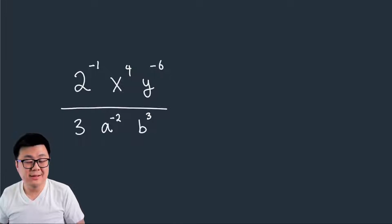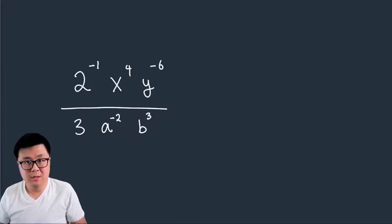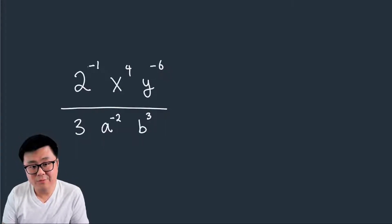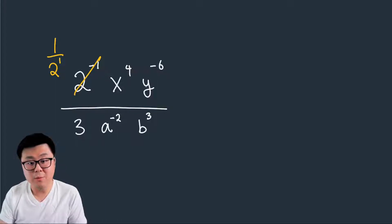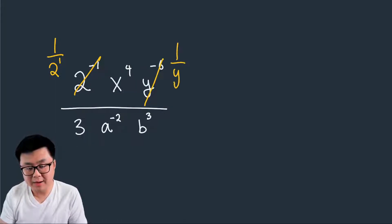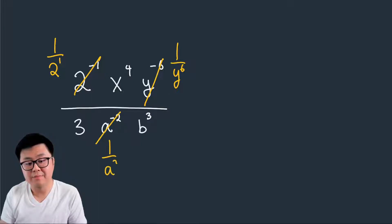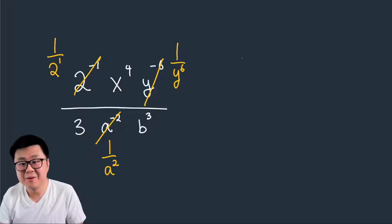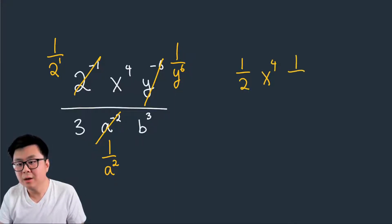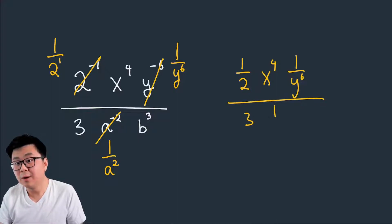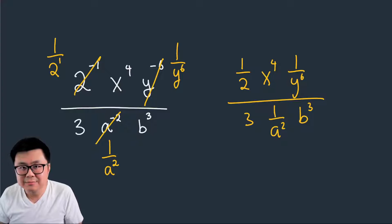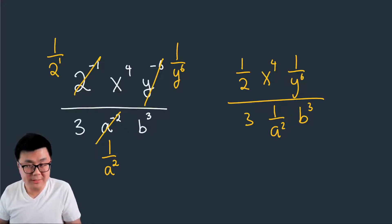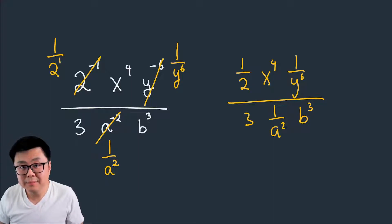Now let's see what happens if we use the original negative exponent rule instead. You see 2 to the negative 1 — that becomes 1 over 2 to the positive 1. Y to the negative 6 becomes 1 over y to the positive 6. And on the bottom, a to the negative 2 becomes 1 over a to the positive 2. What you end up with is a messy compound fraction: one over 2, times x to the 4, times one over y to the 6 — all over 3 times one over a squared, times b to the 3. How does that make the question easier? It doesn't.